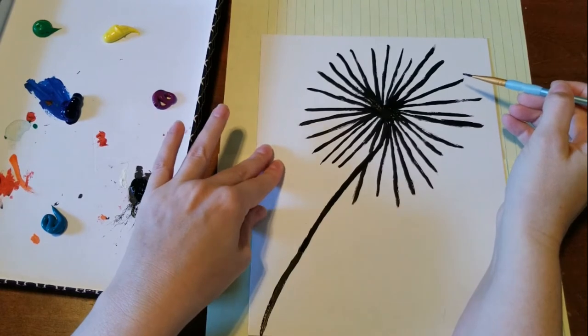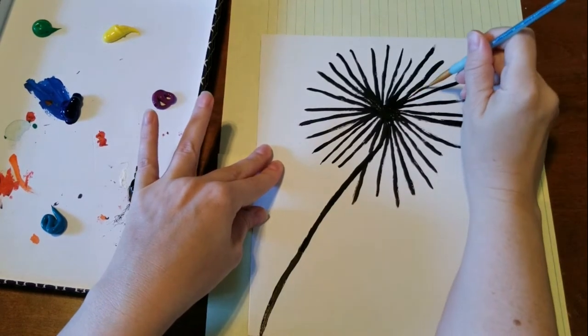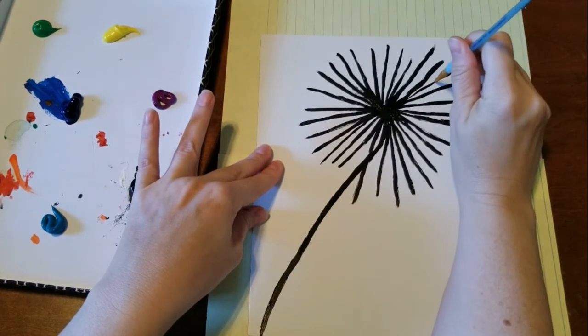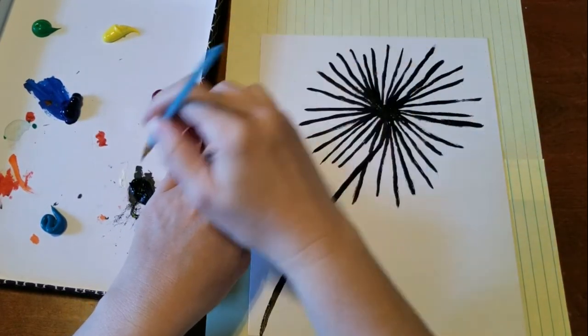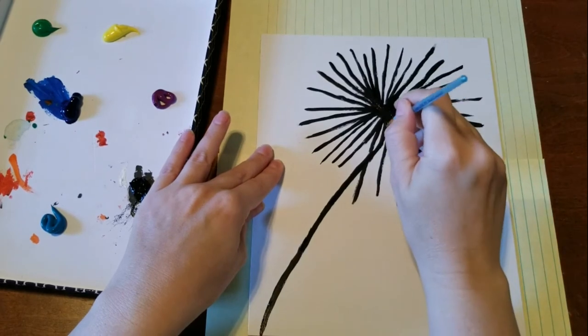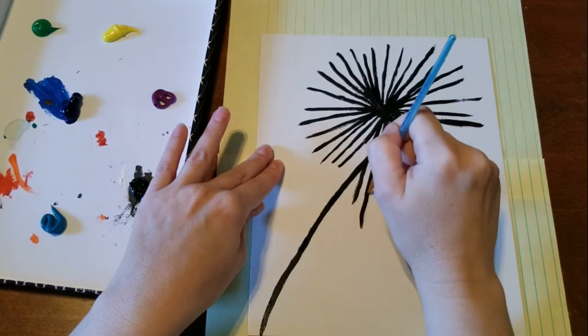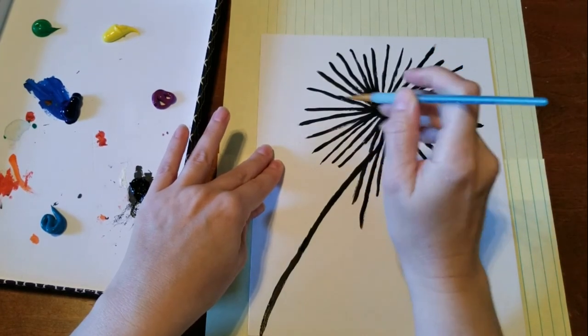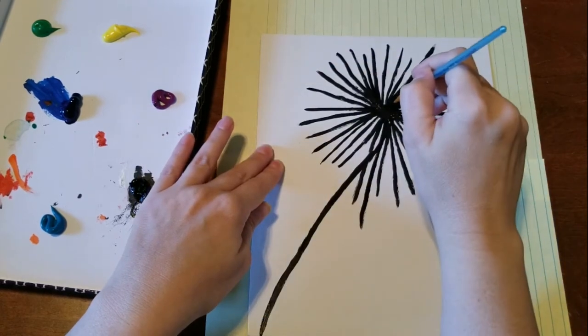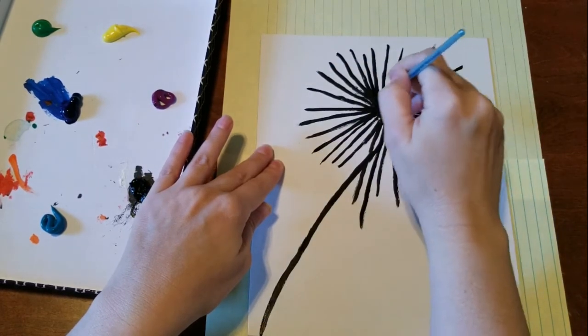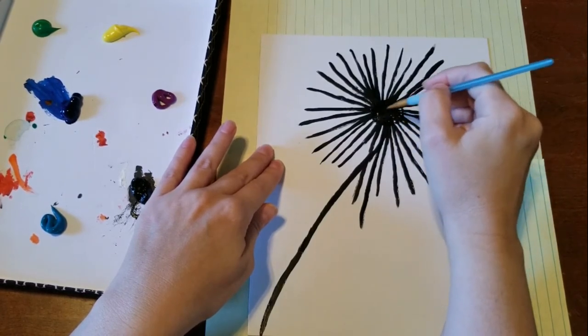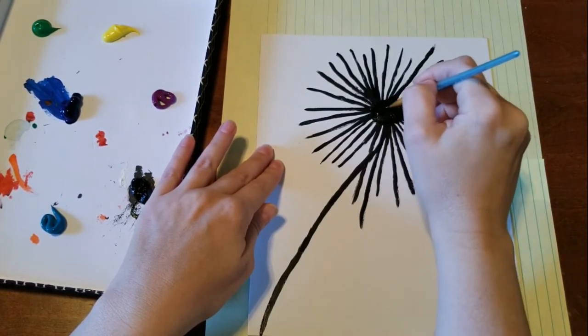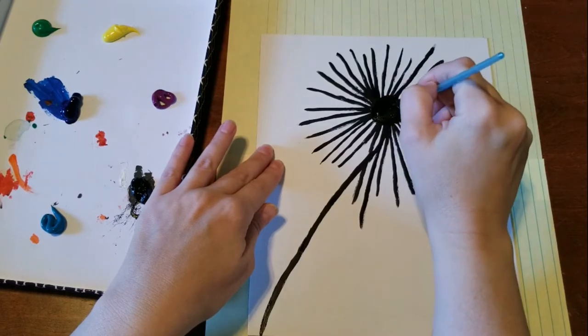So once you've done all your little spokes, if you see like right here there's kind of a space, you could just do an extra little one right there. And I might add a few more here and there, but you're just going to have all these little spokes coming out from the center of your dandelion. So what you can do to kind of make this blend together a little better is you could just get your paintbrush and just kind of paint it where it kind of looks like a little ball, like everything's coming off the center.